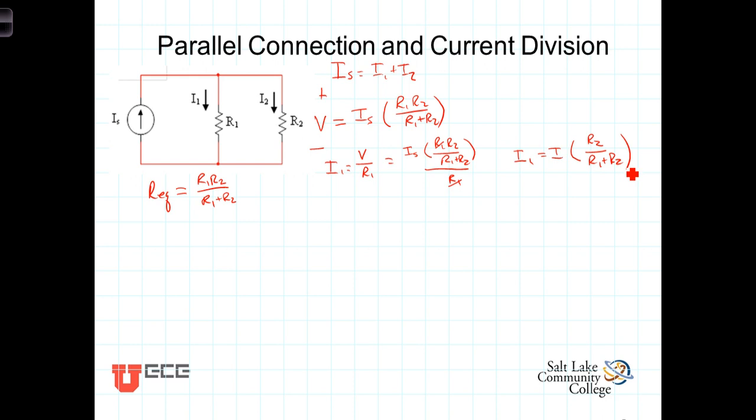Doing similarly for I2, I2 equals V over R2, which is equal to I sub S times R1 R2 over R1 plus R2.